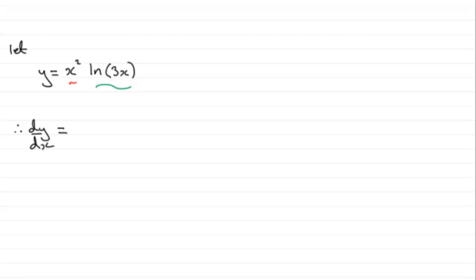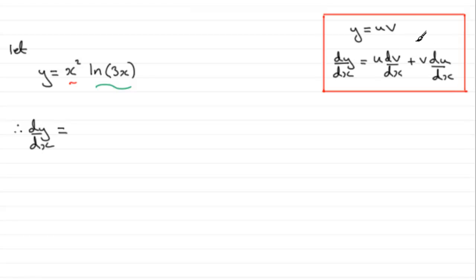And the product rule, if you're unsure of it, and I've got tutorials on this anyway, if you go on my website, you'll notice that if you've got y equals two functions of x, let's say uv, dy dx equals u times dv dx plus v du dx.